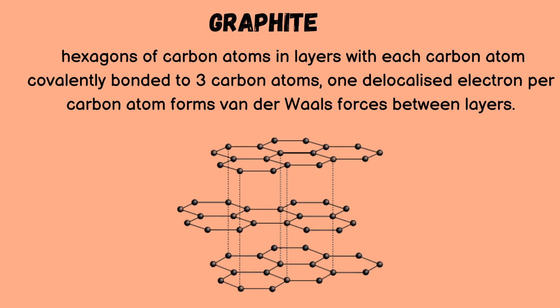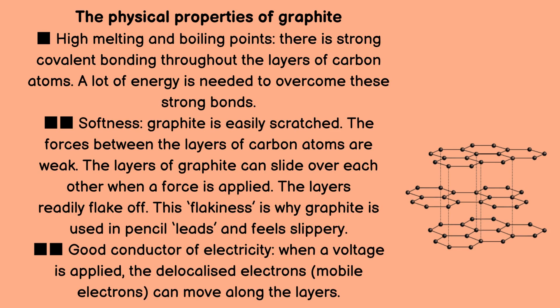The next example is graphite — hexagons of carbon atoms in layers, with each carbon atom covalently bonded to three carbon atoms. One delocalized electron per carbon atom forms van der Waals forces between the layers. Graphite has high melting and boiling points due to strong covalent bonding throughout the layers. Graphite is soft and easily scratched because the forces between the layers of carbon atoms are weak, allowing the layers to slide over each other when a force is applied, and the layers readily flake off. This flakiness is why graphite is used in pencil leads and feels slippery.